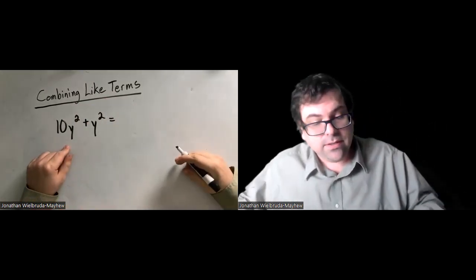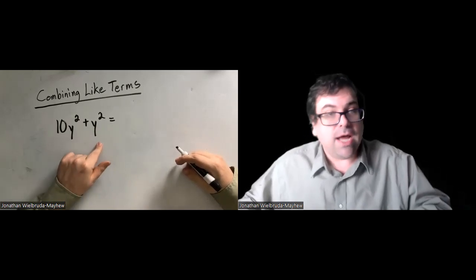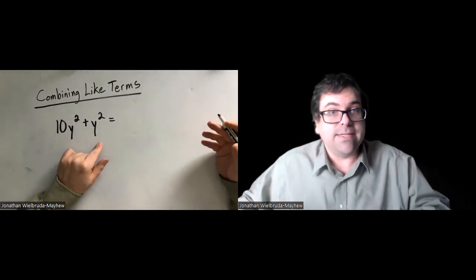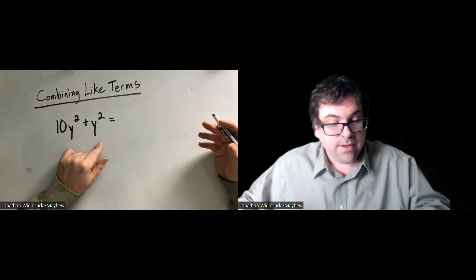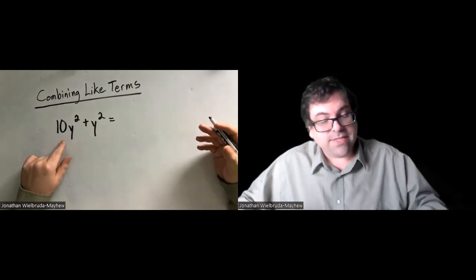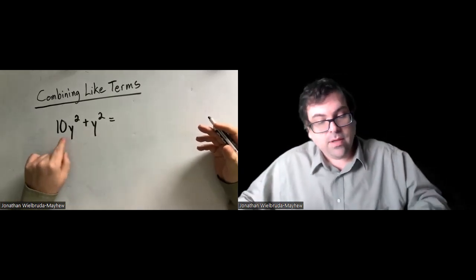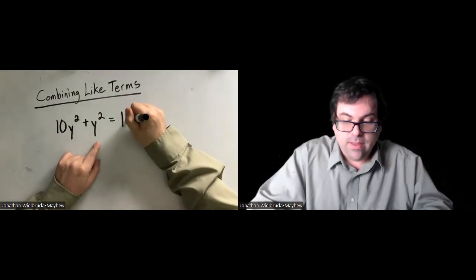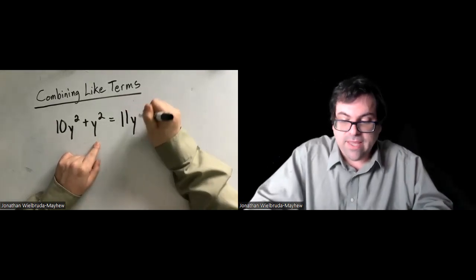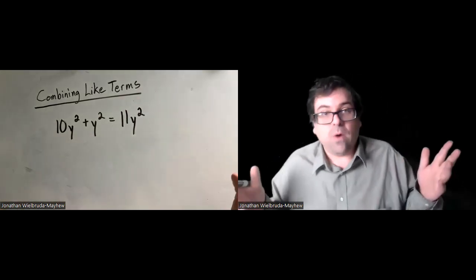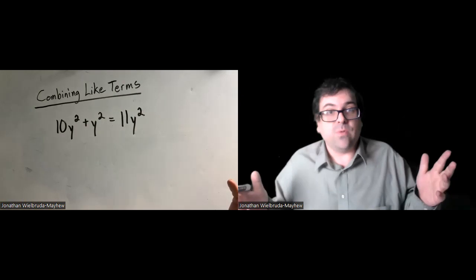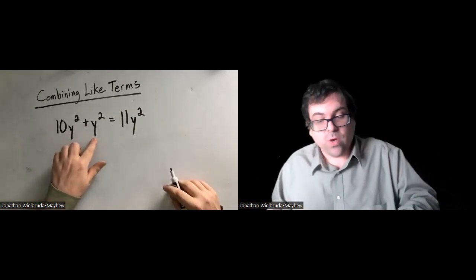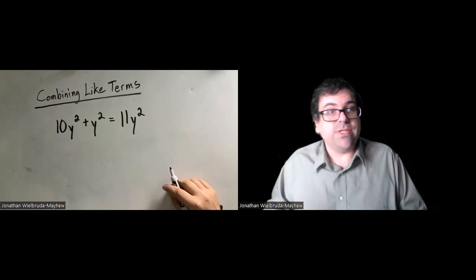So let's do some work combining like terms. 10y squared plus y squared — they're like terms, same variables raised to the same powers. If we have 10 of them plus 1 of them, that gives us 11 of them. y squareds are like oranges: 10 oranges plus 1 orange is 11 oranges.